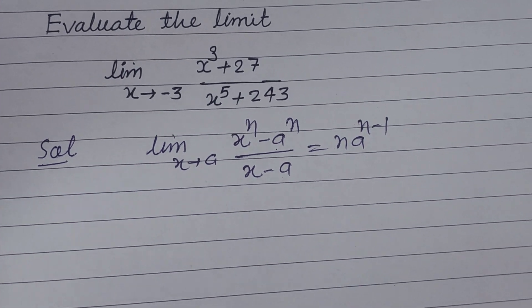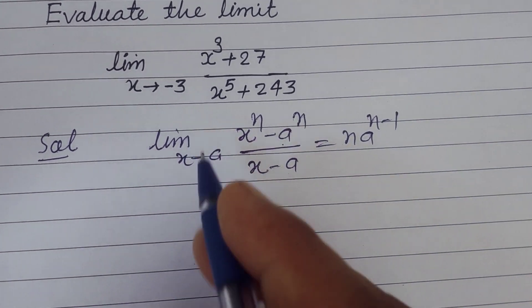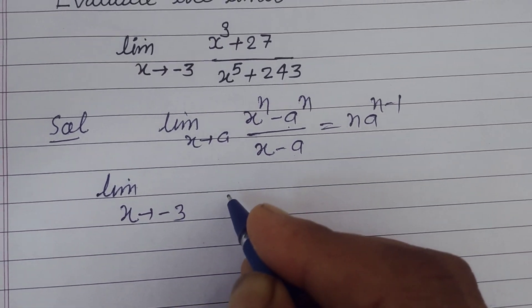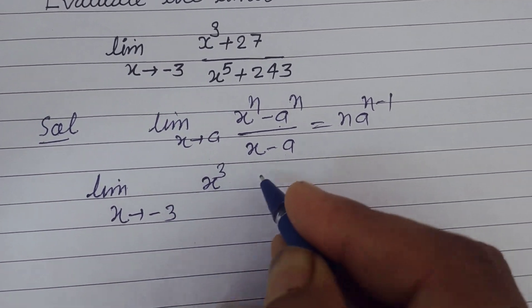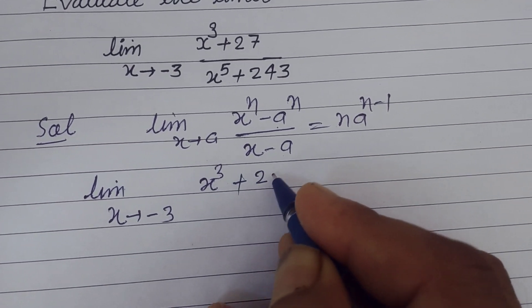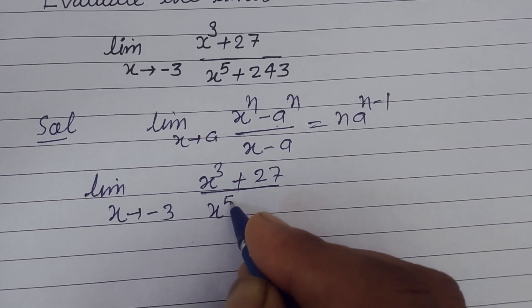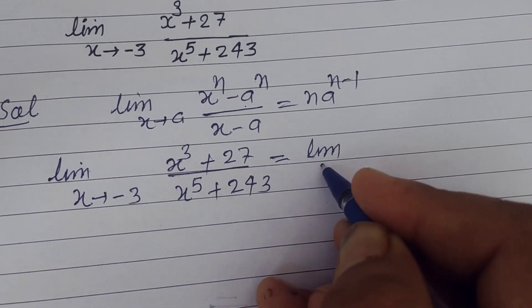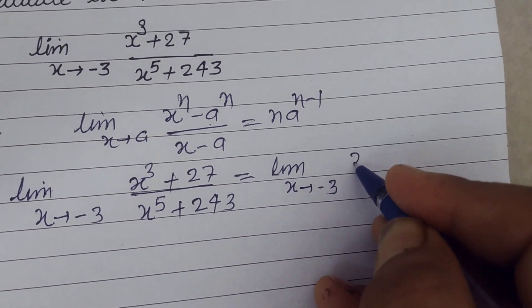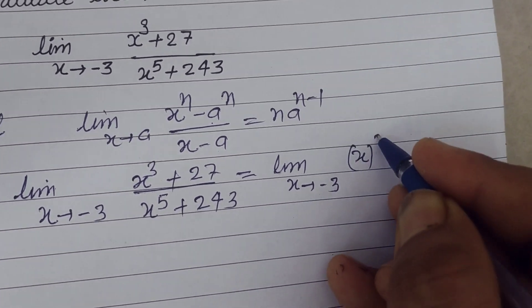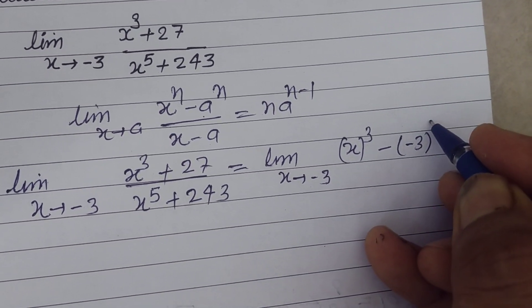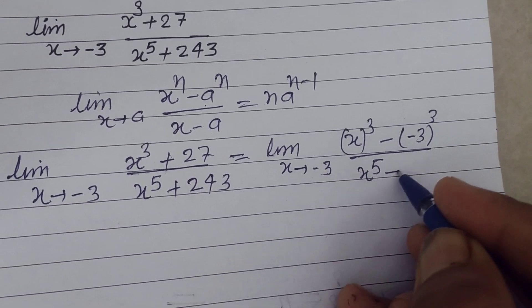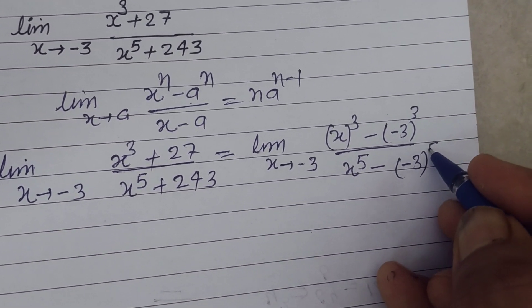So we rewrite the limit x tends to minus 3 as: x cubed minus (minus 3) to the power 3, upon x to the power 5 minus (minus 3) to the power 5.